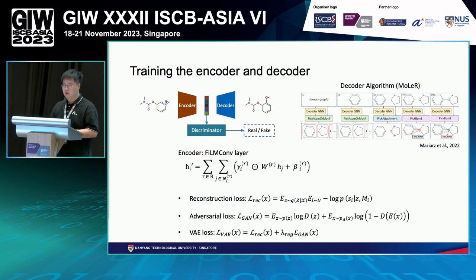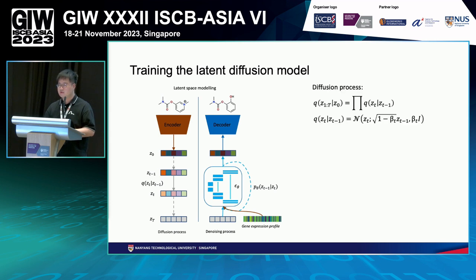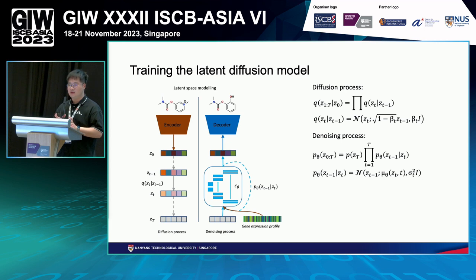Our VAE loss is the combination of this reconstruction loss and this adversarial loss. After training the encoder and decoder, we proceed to train the latent diffusion model. The diffusion process adds noise to the latent representation and makes it Gaussian noise. In the denoising process, we try to remove this noise. Our idea is to train a neural network that ensures that at each time step T, the latent representation in the diffusion process and the denoising process should be as close as possible, so that at the last step we should be able to recover the latent representation.